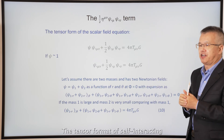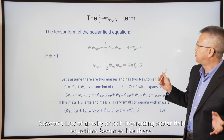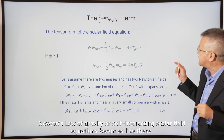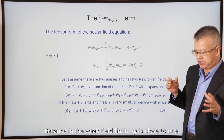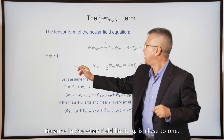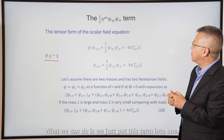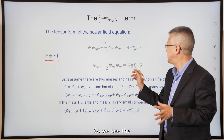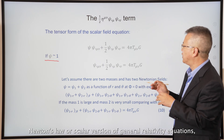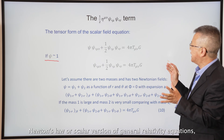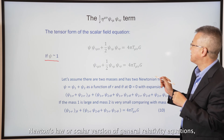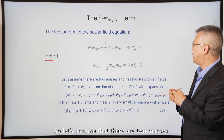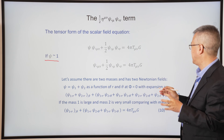The tensor format of the self-interacting Newton's law of gravity — the self-interacting scalar field equations — in the weak field limit where phi is close to one, we collect terms and recover a scalar version of general relativity equations. This term is missing in Einstein's field equations.